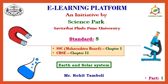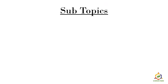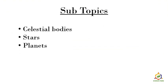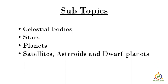Welcome to the e-learning platform by Science Park. Today the topic we are going to cover is Earth and Solar System from Standard 5th. This is Part 1 of Earth and Solar System. We will learn about celestial bodies, stars, a few planets, satellites, asteroids, dwarf planets, and in all we are going to learn about the Solar System — what exactly it is and what are its components.